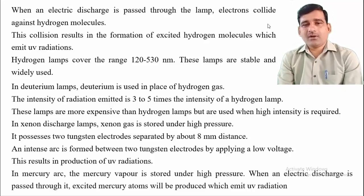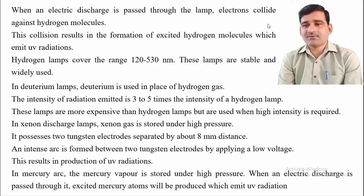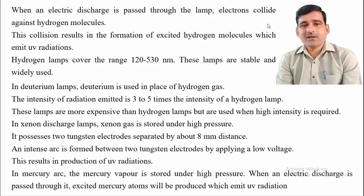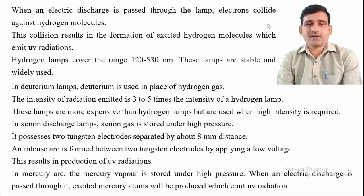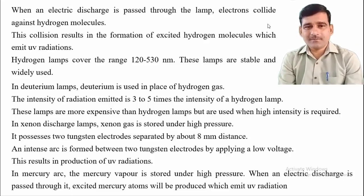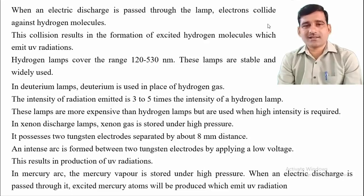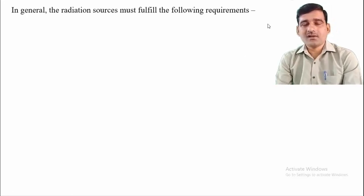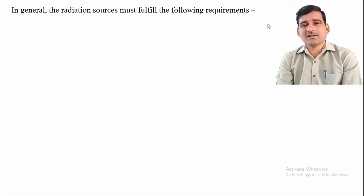In a mercury arc lamp, mercury vapor is stored under high pressure. When an electric discharge is passed through it, excited mercury atoms are produced which emit radiation in the ultraviolet region. In summary, for hydrogen, deuterium, xenon discharge, and mercury arc lamps, the gas vapors are stored in an evacuated glass bulb. Applying power supply causes electron collisions, exciting the gas, which then returns to ground state by emitting light in the UV region.